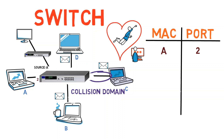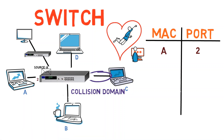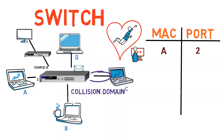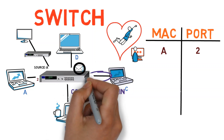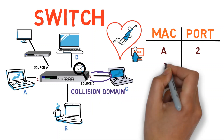For now, B, C and D all receive the frame. Next, A sends another message to B. The switch looks at it and already knows that A's MAC address is plugged to port number 2. It still doesn't know B, so this frame is also sent to all other ports. Now C sends a frame to A. The switch looks at the source address and adds the mapping between C's MAC address and port number 5 to its table.